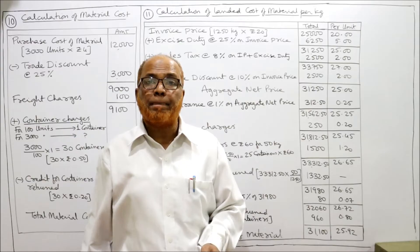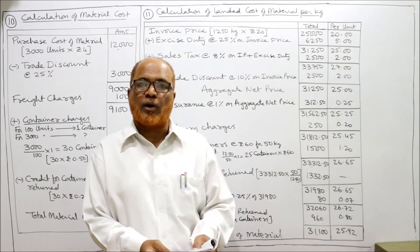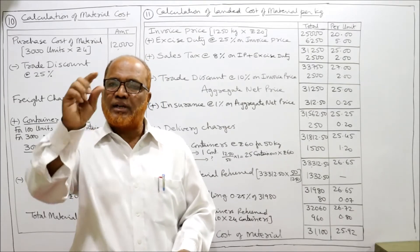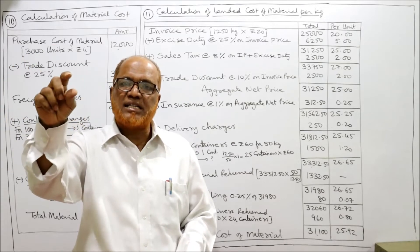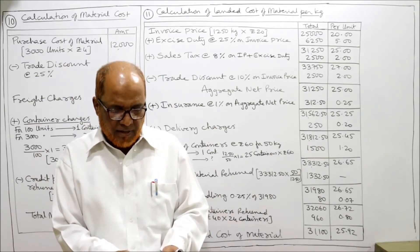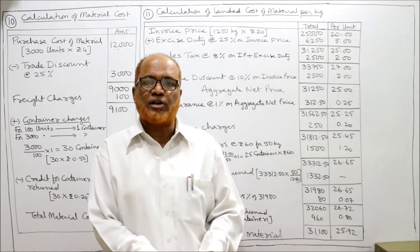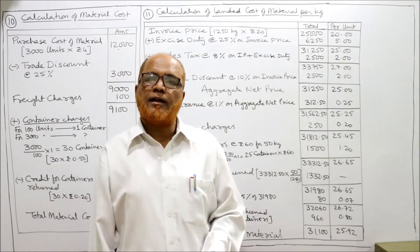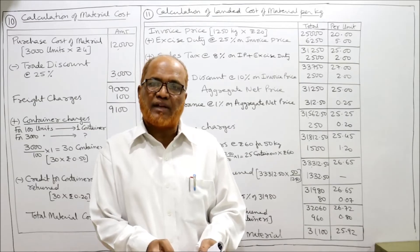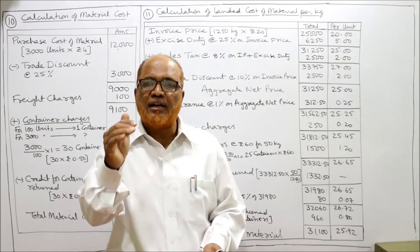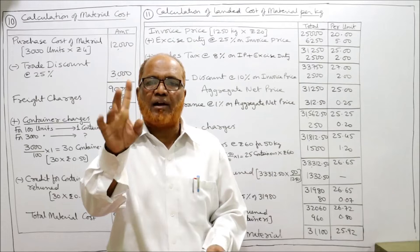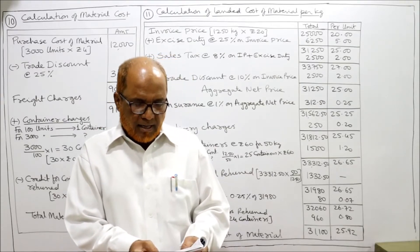Sales tax is 8% on invoice price including excise duty. So first take the invoice price, add excise duty, then on that total add sales tax at 8%. Trade discount is 10% of invoice price and will be deducted from the invoice price. Insurance is 1% of the aggregate net price after deducting trade discount.